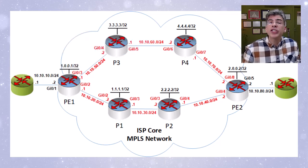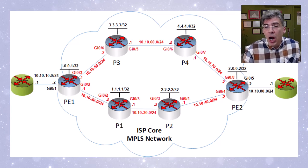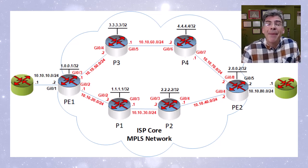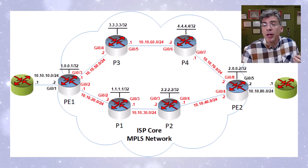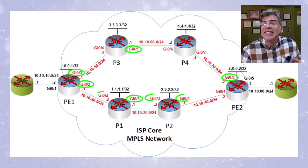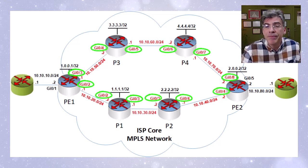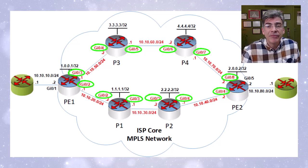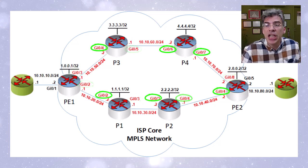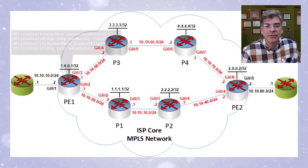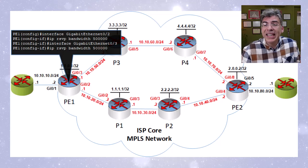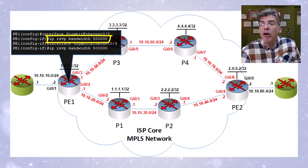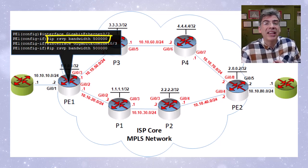Next, we go on to configure RSVP TE. RSVP must be configured on all of the interfaces that will be taking part in MPLS TE — all the labeled interfaces on the P and PE routers, the same interfaces for which we enabled MPLS TE. We enter interface configuration mode for GigabitEthernet 0/2 on PE1 and issue the 'ip rsvp bandwidth 500000' command.